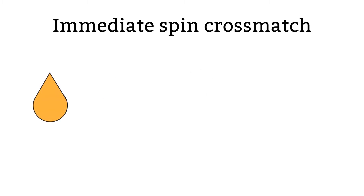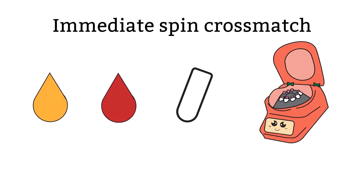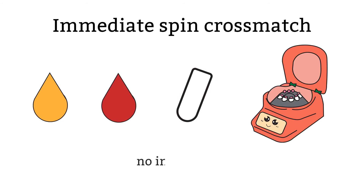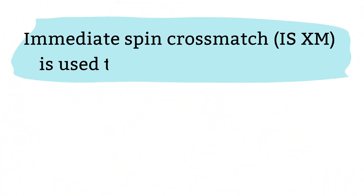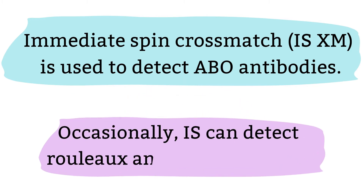Let's talk a bit about immediate spin cross-match compatibility. What is an immediate spin cross-match? As the name implies, you will combine patient plasma and the red cells from a donor, then spin it down to read the agglutination right away without waiting for room temperature or 37-degree incubations. Immediate spin cross-match compatibility is used to detect ABO incompatibility. The main objective of this test is to determine whether the patient's serum contains A or B antibodies capable of reacting with the donor cells when transfused. Occasionally, immediate spins can also detect rouleaux and cold antibodies.